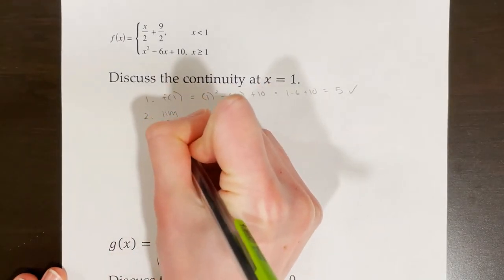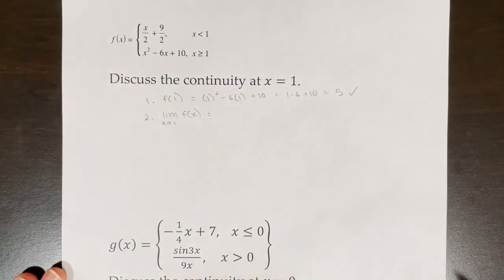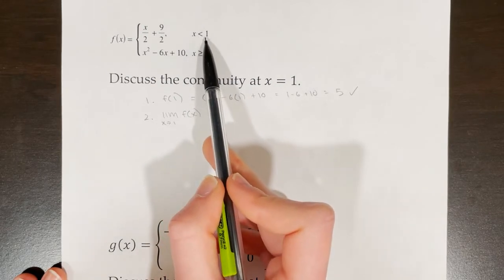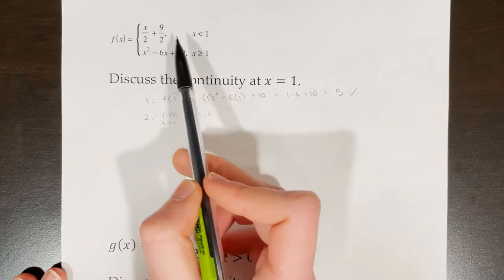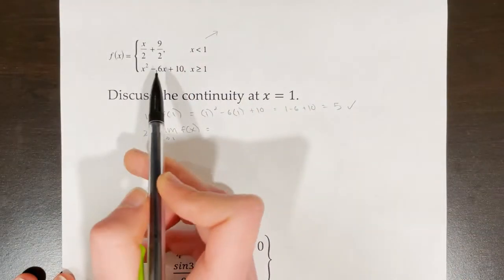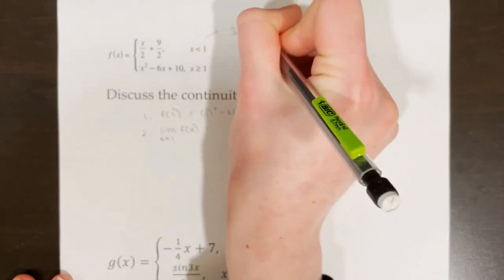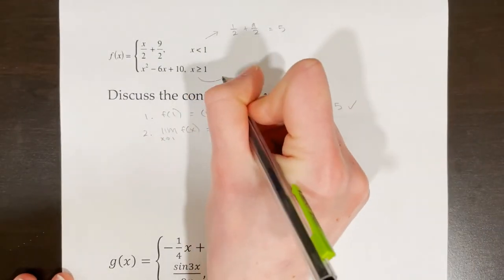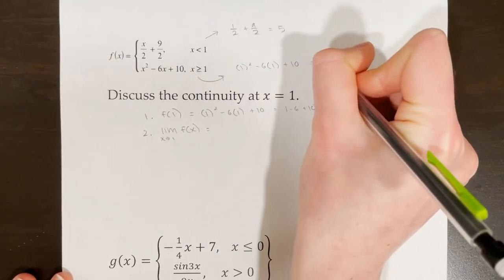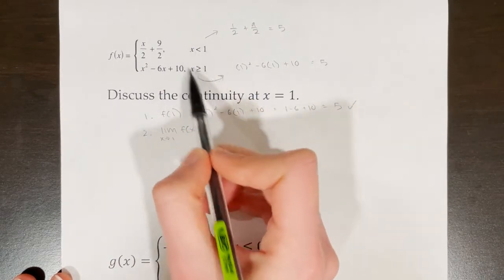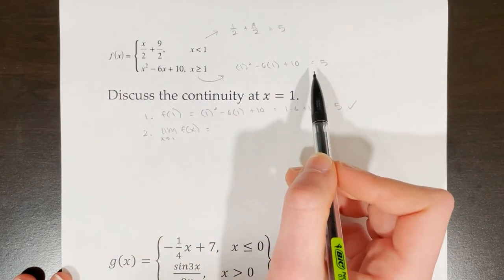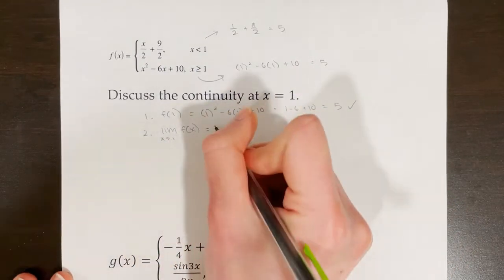Step two: find the limit as x approaches one of f of x. Since it's a piecewise function, we look at the left-sided and right-sided limits. These are both continuous functions, so we can use direct substitution. For the top function: one half plus nine halves equals ten halves, or five. For the bottom function: one squared minus six times one plus ten equals five. So even though it's piecewise, both pieces equal five — the limit of f of x as x approaches one is equal to five.